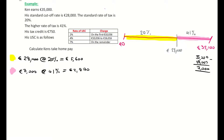I'm going to add those two figures together to get my tax so far: 5,600 plus 2,870 equals 8,470 euro. That's the tax payable so far. Now I'm going to focus on the USC — the universal social charge.